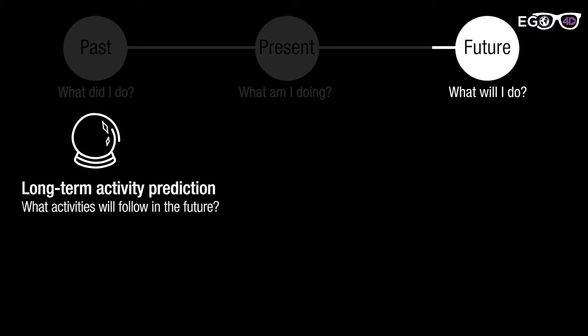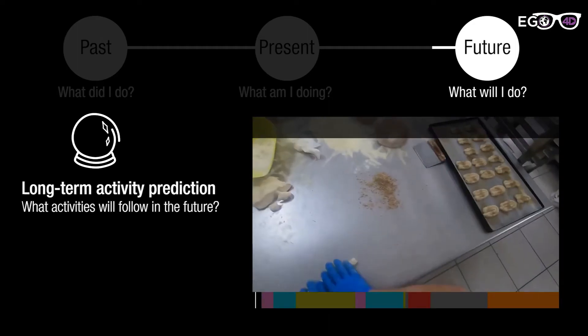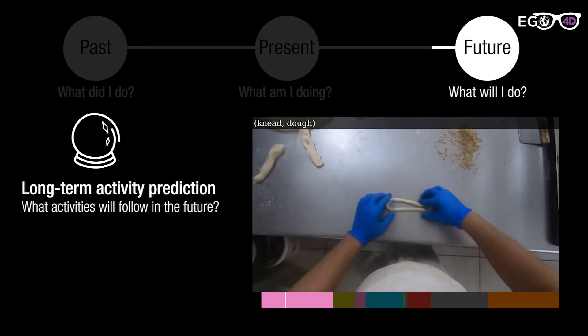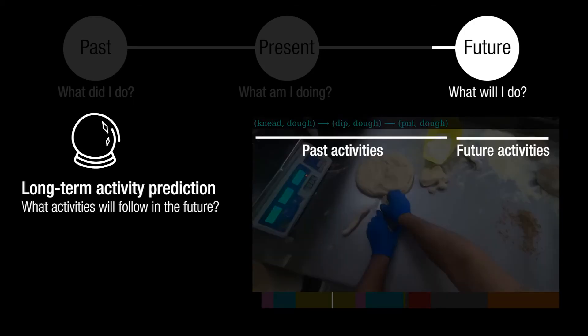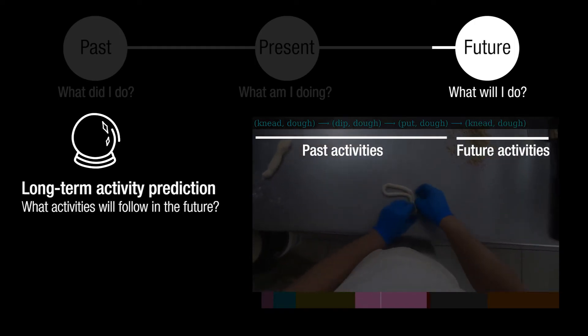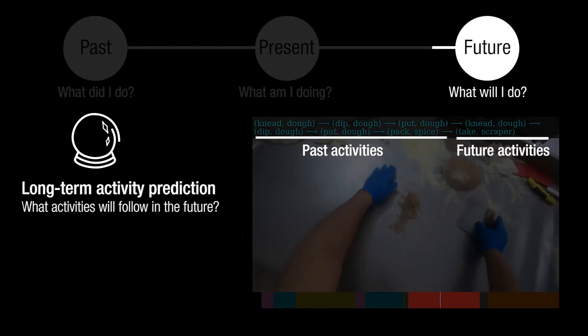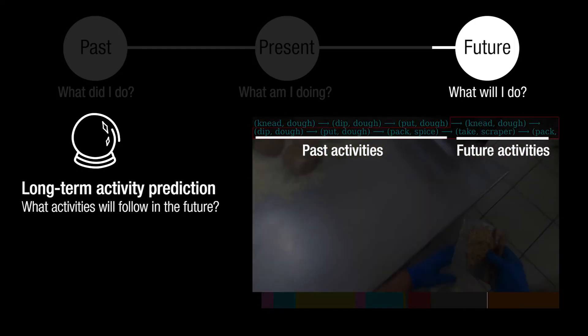The long-term anticipation task answers the question, what sequence of activities will happen in the future? For example, after watching the camera wearer manipulate the dough, the algorithm is expected to predict that the camera wearer will manipulate another piece of dough, pack the spices, and pick up the scraper in sequence.